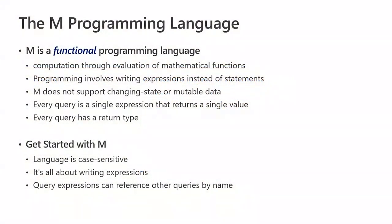Let's go through the M programming language fundamentals. M is a functional language, which means lines of M code do not perform operations — they basically evaluate something. One step can only be evaluated after the previous step is evaluated. M doesn't really support changing data; it works in terms of immutable data structures. As you go down a query, you continue to build a new set of variables. Every query has a single value it returns of a particular type. Also note that M is case-sensitive — it's more like C# than VBScript.